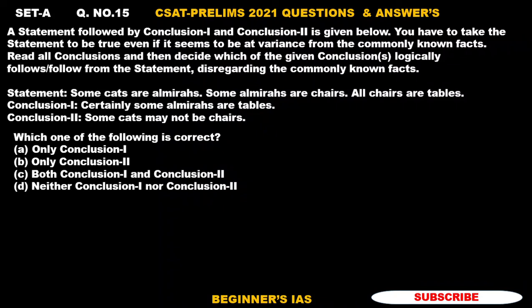Hello aspirants, welcome. Let us discuss question number 15. This is based on statement and conclusion problems. This is one of the favorite topics for examiners in any competitive exams, especially UPSC. To solve this kind of question, just check the statements: some cats are almiras — the word 'some' here is very important. Some almiras are chairs, and all chairs are tables. You should be very careful with words like 'some' and 'all'.